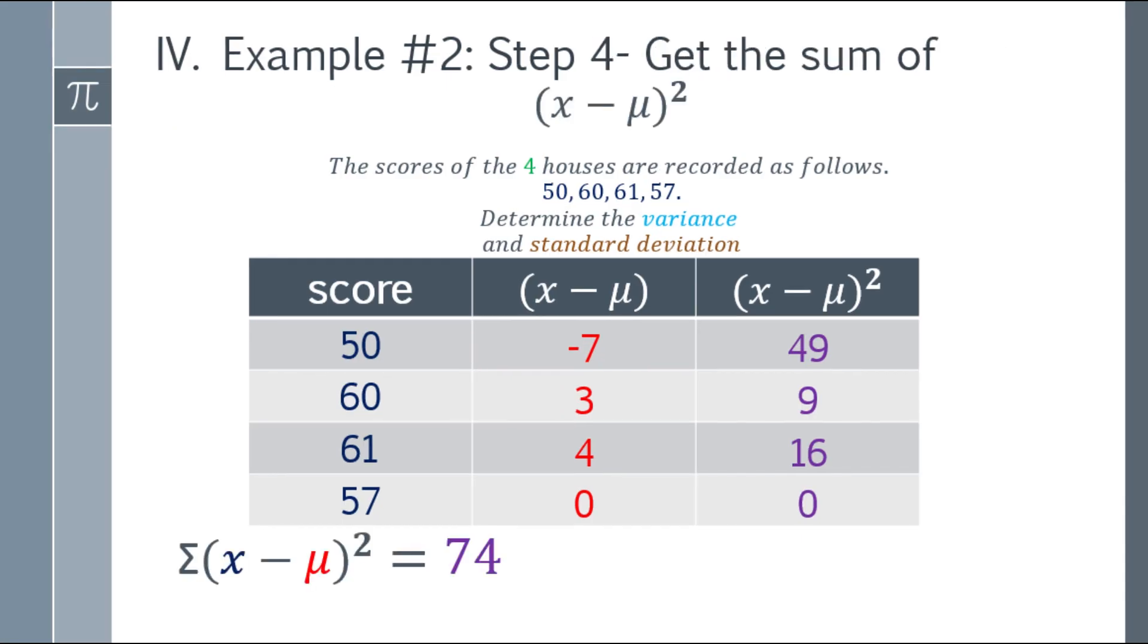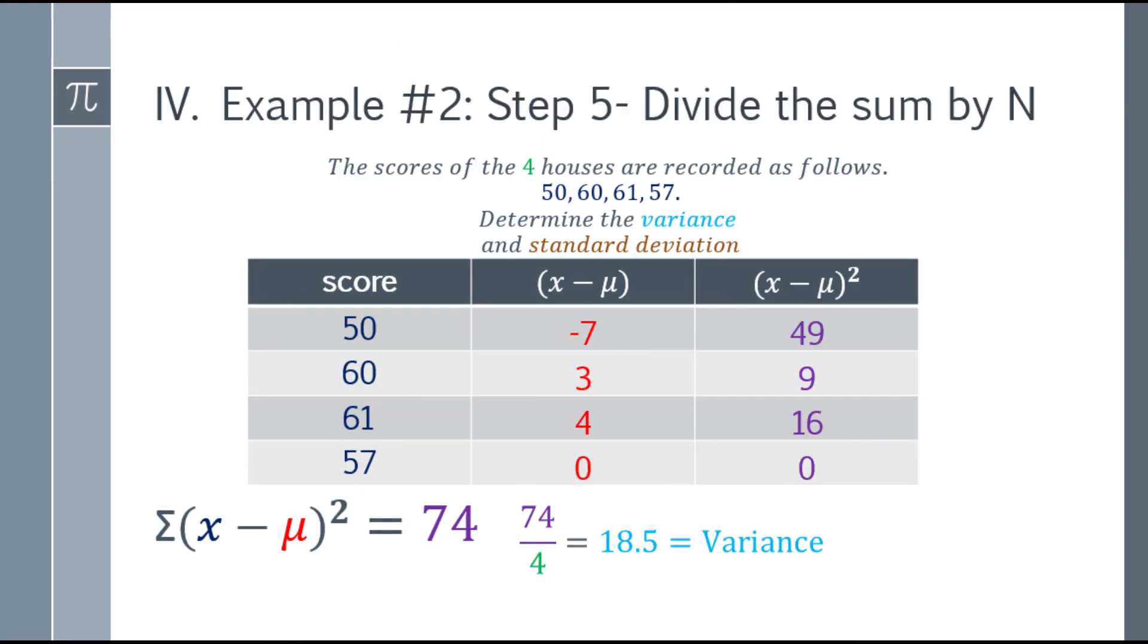Step 4, you have to get the sum. Okay. So 49 plus 9, plus 16, that will be 74. Now, to get the variance, you have to divide it by the population size. Population size here is 4. So 74 divide by 4 is 18.5. That's the variance.